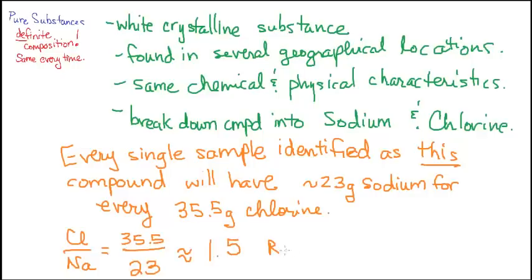Those numbers seem kind of strange, so let's look at it as a ratio. Our chlorine to sodium ratio would be 1.5 every single time that we found a sample of this particular compound that had the same characteristics.